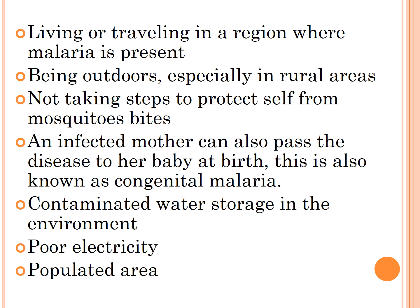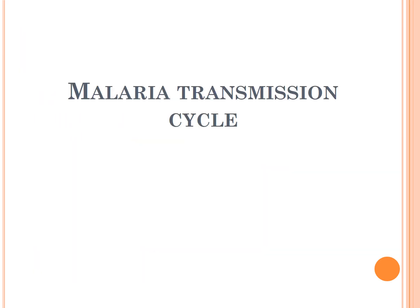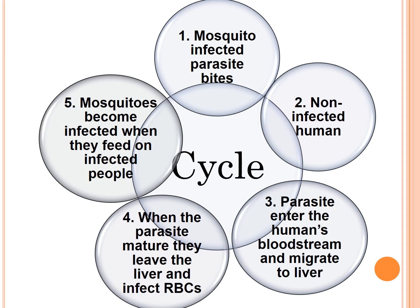Regarding malaria transmission: an infected mosquito carrying the parasite bites a non-infected human, and the parasite enters the human bloodstream. The parasites then mature and migrate to the liver, where they continue to develop.